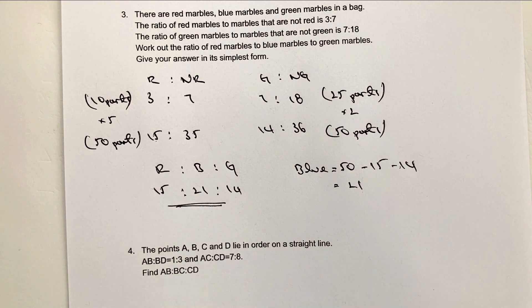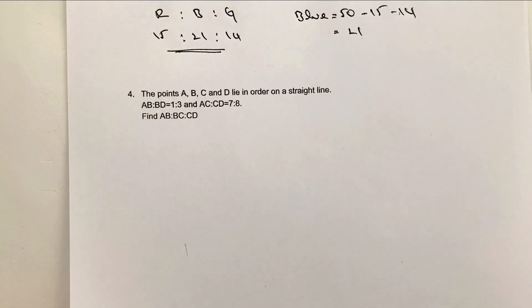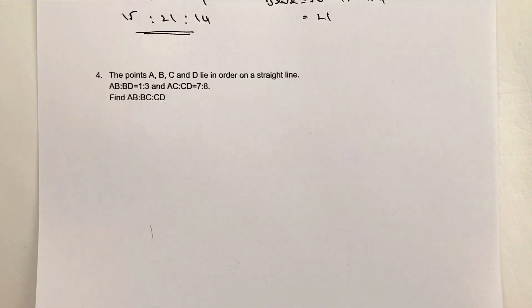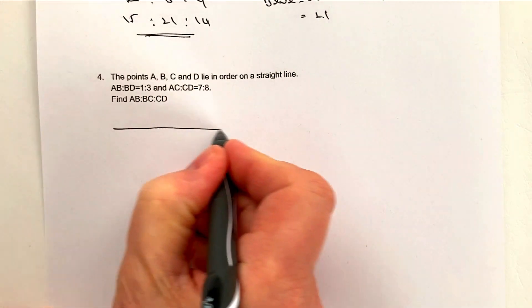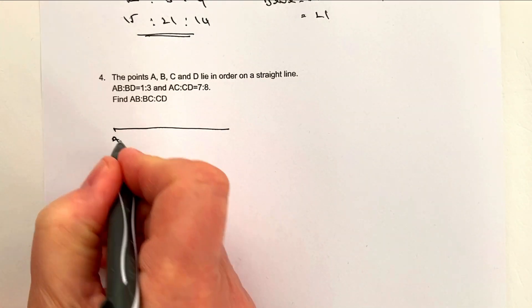Okay, let's have a look then at question number four, which is the final question in this particular video. Points A, B, C, and D lie in order on a straight line. So let's put them in order in a straight line and we'll create a kind of visual sort of reference that we can use for this particular question.